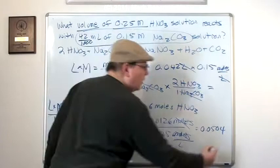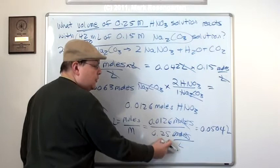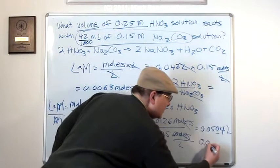Now, let's just double check for sig figs. We have three sig figs in the numerator, two sig figs in the denominator. So we've got to knock this down to two sig figs, 0.050 liters, which is 50 milliliters.